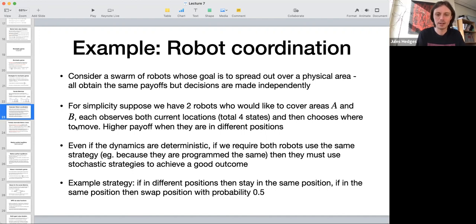That's an example of a strategy that if both of these robots have it, they're going to quickly converge with probability one to the state where they're both covering both areas, and then they're going to stay put and get lots of payoff.